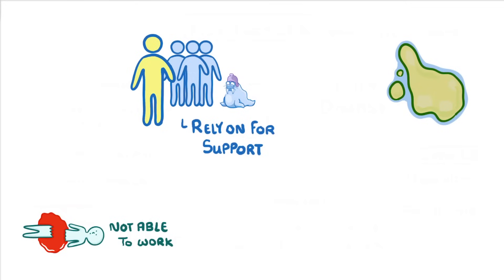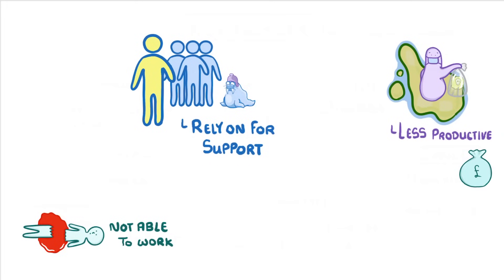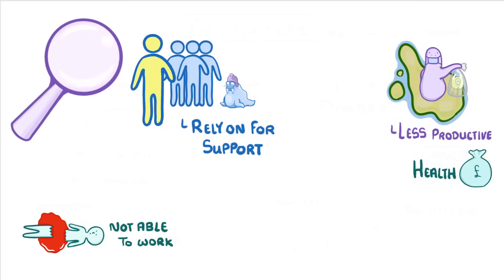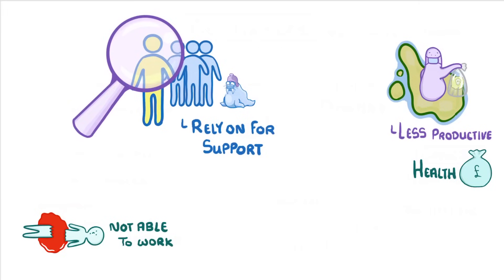On a national scale, if there's more disease, then the workforce will be less productive, and a bigger share of government spending will have to be spent on health. In order to try and reduce this burden of disease, scientists first need to find out who catches each type of disease and why.